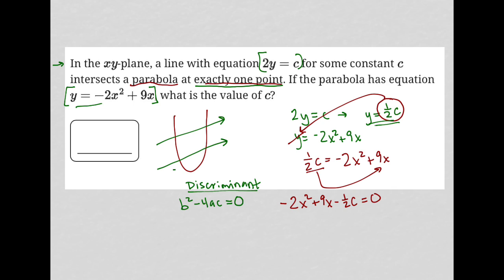Hopefully that makes sense. We used this bit of information in two ways: we used it to combine the equations here, and then we also used it to understand that we can figure out a lot about this through solving for the discriminant, because again it only intersects at one point. So what do I know about b and a and c? Well, I know that -2 is my a value here, b is 9, and c is all of that, -½c.